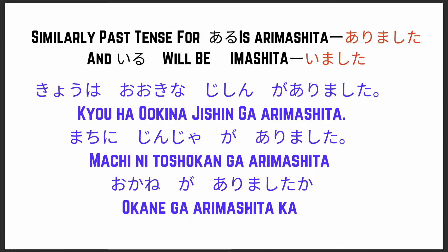Now let's see how aru and iru can be used in past tense. We have been using the polite form 'arimasu' for aru and 'imasu' for iru. In the past tense, 'arimasu' becomes 'arimashita' and 'imasu' becomes 'imashita.'